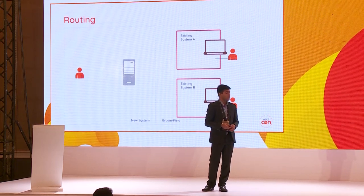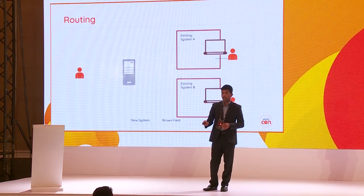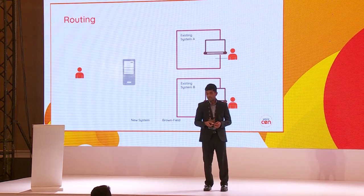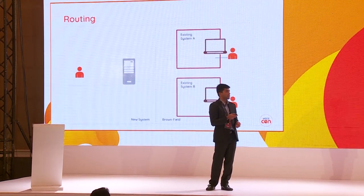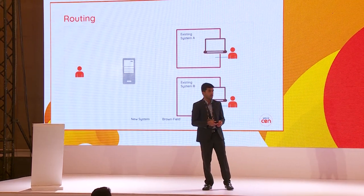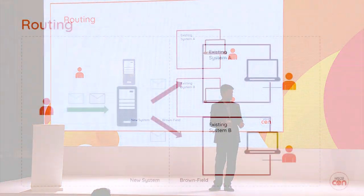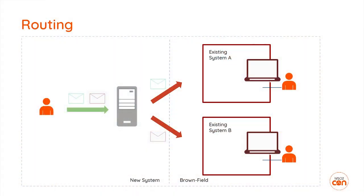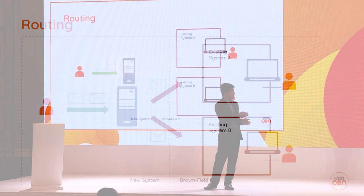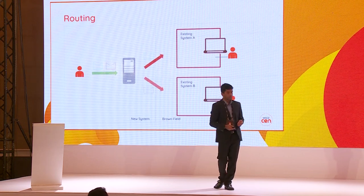The second requirement is routing. There could be some property we need to look at when calling different systems — it might be time of day, requiring you to call a different system, or it could be a message header. When you receive a message and want to send it, you have to check and send it to the matching endpoint.